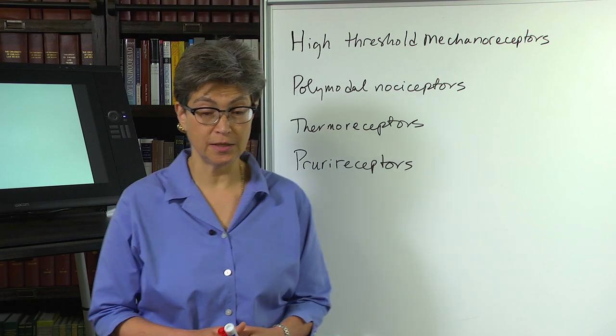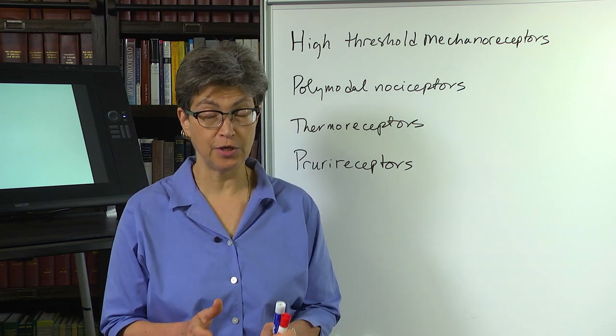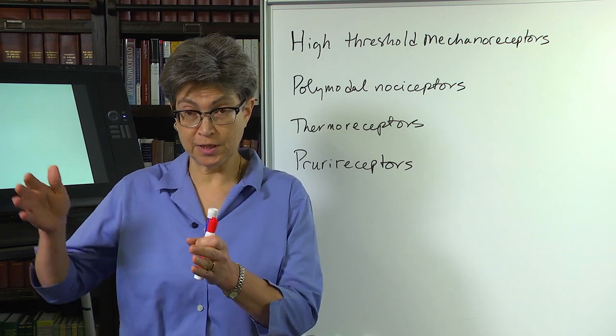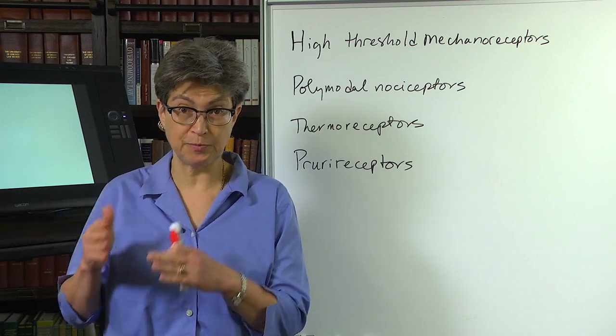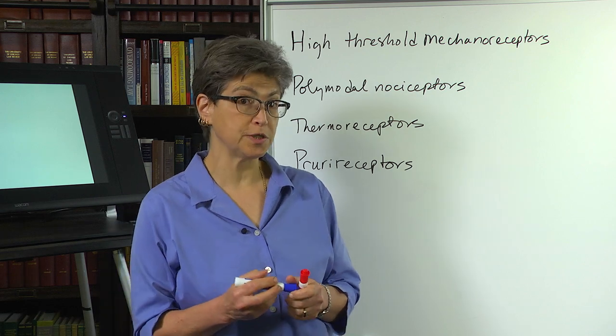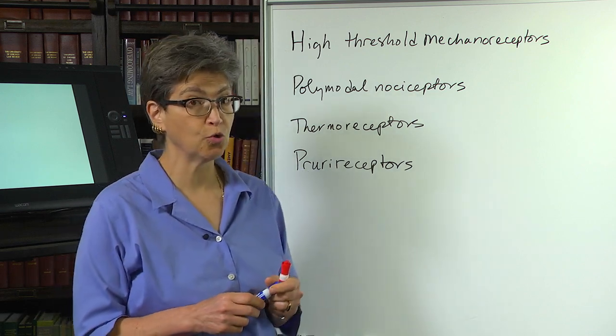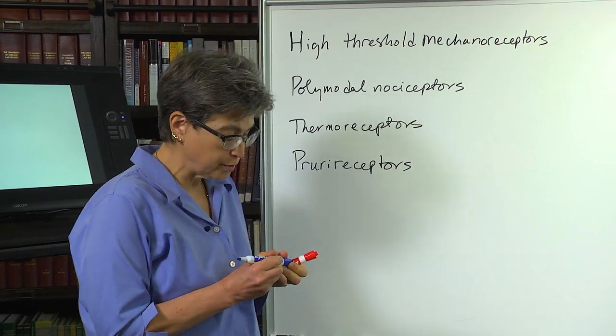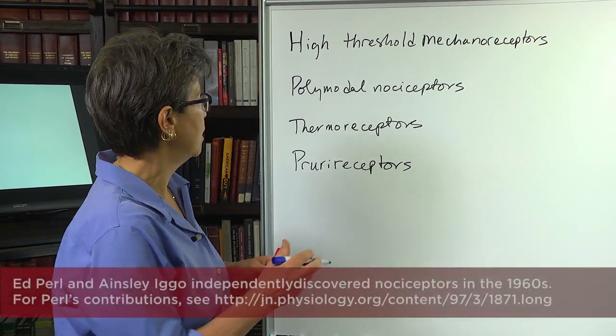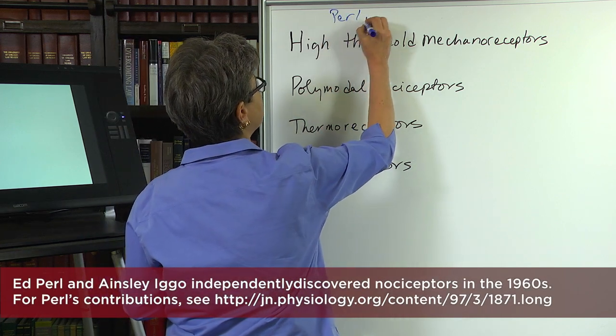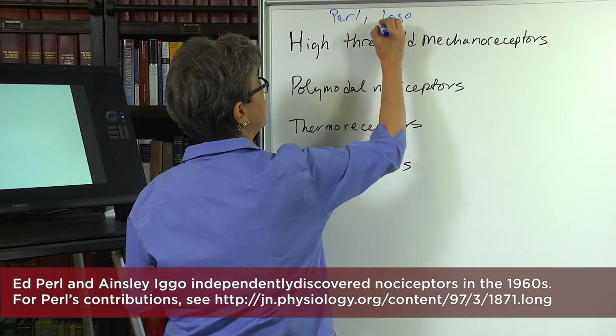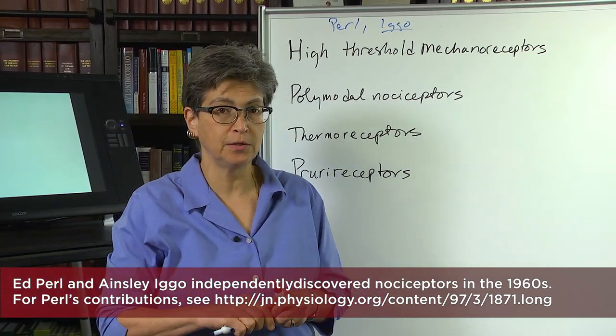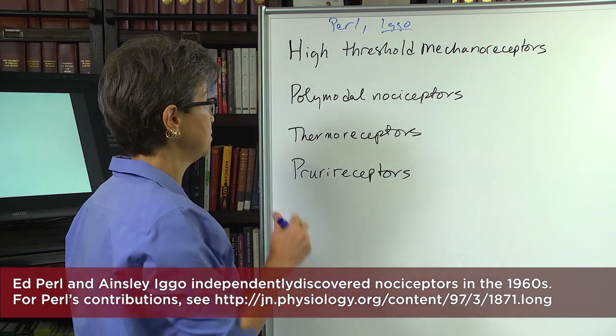So the fibers, the primary afferents that carry nociceptive information - information that under normal circumstances can lead to a perception of pain - are called nociceptors, a term coined by Ed Pearl, who also discovered, along with Ego. So Pearl and Ego separately, independently discovered nociceptors around the same time.